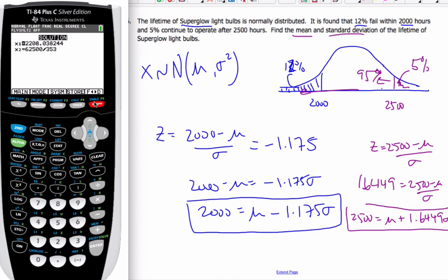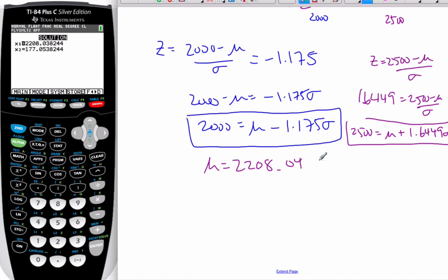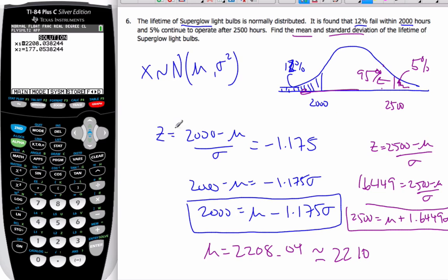And I'll even put it to a decimal. And so the mean is equal to 2208.04, which is approximately 2208 to three significant figures. And σ is 177 approximately as well. And so here we find our z-scores, make simultaneous equations, and then solve for μ and σ.